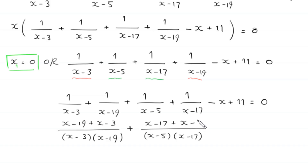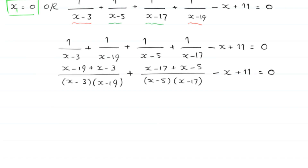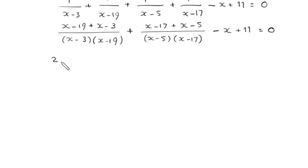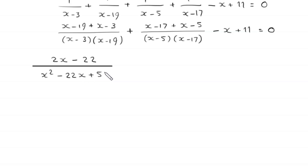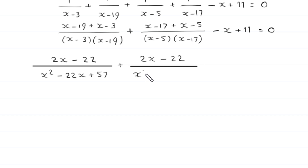We also take LCM of (x minus 5) times (x minus 17), dividing gives (x minus 17) plus (x minus 5), minus x plus 11 is equal to 0. So x plus x will become 2x, and negative 19 minus 3 gives negative 22, divided by x squared minus 22x plus 57. Plus 2x and negative 17 minus 5 gives negative 22, divided by x squared minus 22x plus 85, minus x plus 11 is equal to 0.